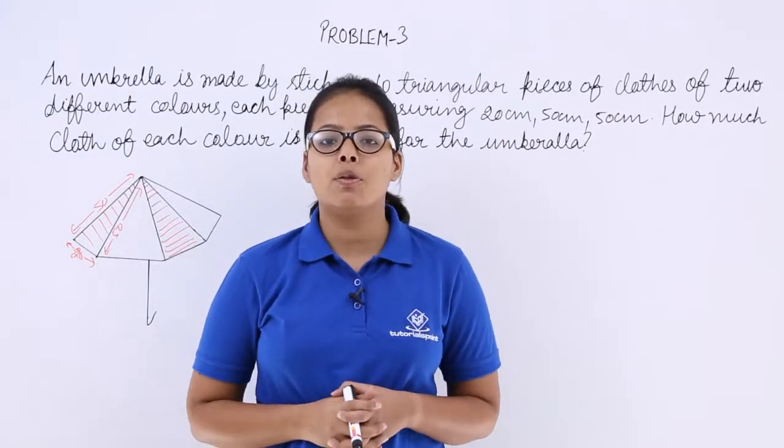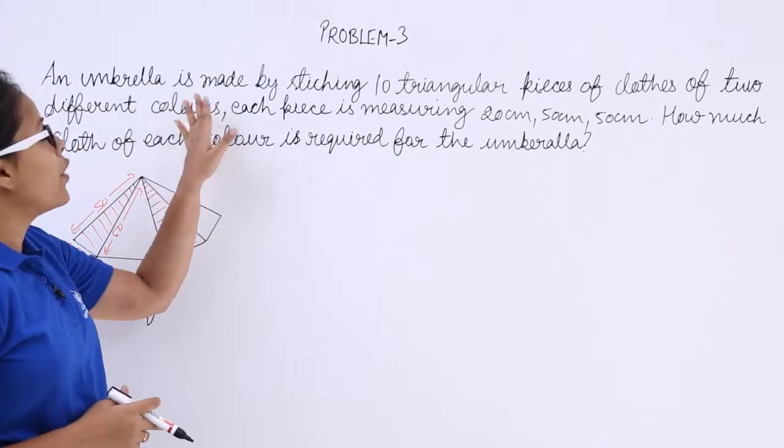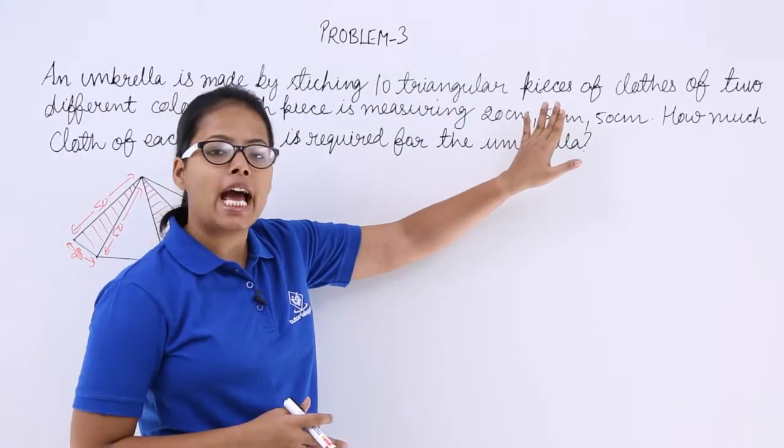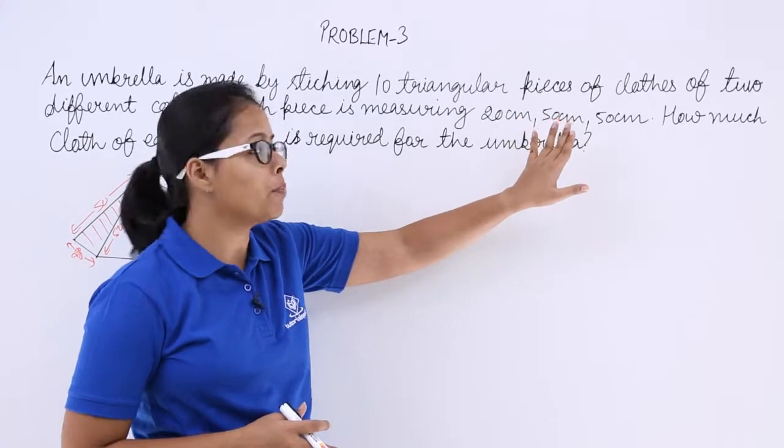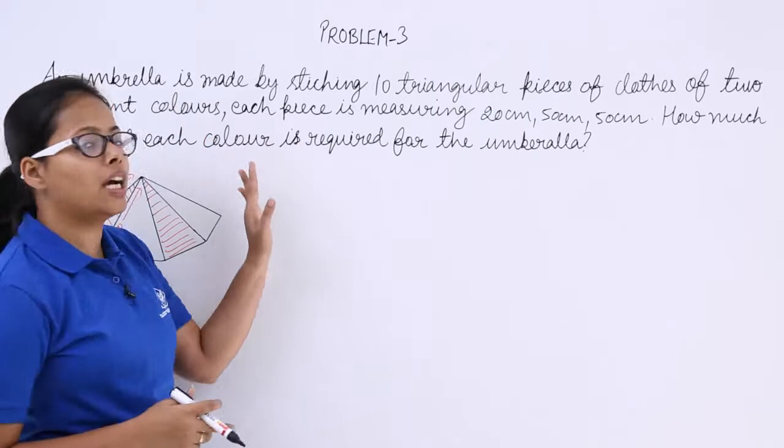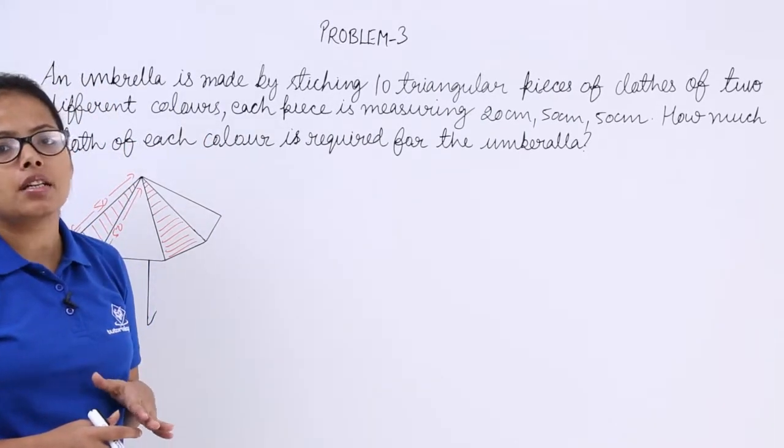Hello guys, let's discuss another problem. In this problem, an umbrella is made by stitching 10 triangular pieces of clothes of two different colors. Let's suppose one color is red and the other color is blue.